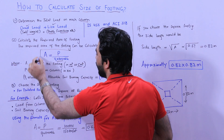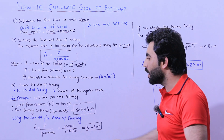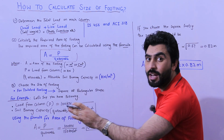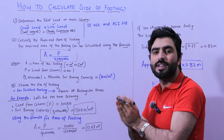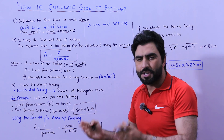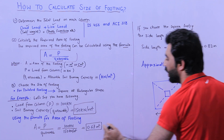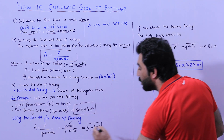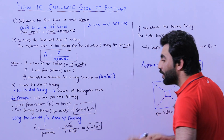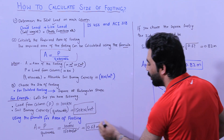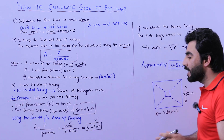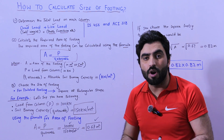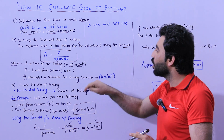Using the formula A = P / Q_allowable, with P = 100 kN and bearing capacity = 150 kN/m², when you do the calculation you will find A = 0.67 meter square. This is the required area of the footing on which we have the applied load of 100 kilonewtons.